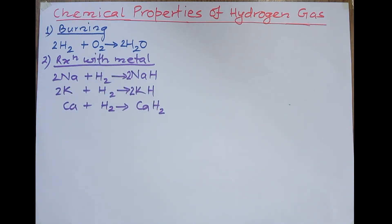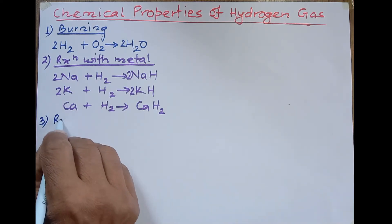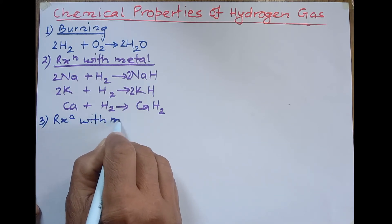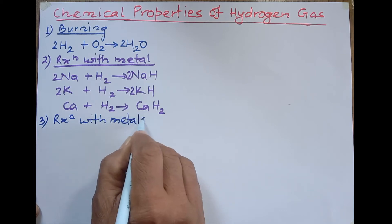When hydrogen gas is passed over hot metallic oxide like copper oxide, lead oxide, zinc oxide, iron oxide, then these metallic oxides are reduced to metal. Thus metal is separated. This is the reaction with metal oxide.